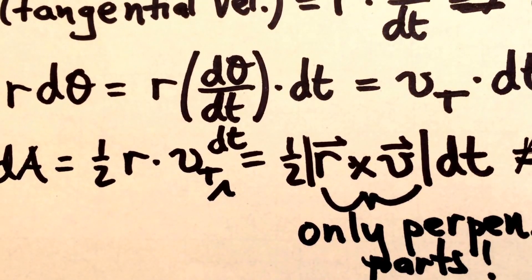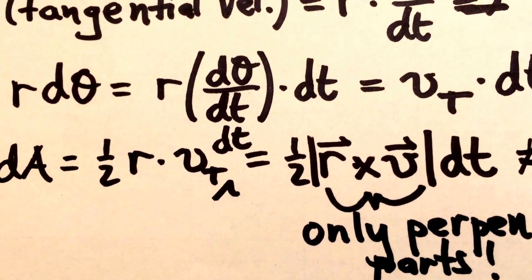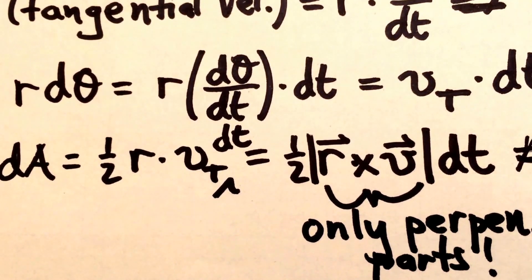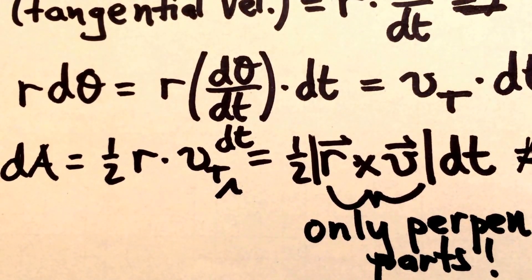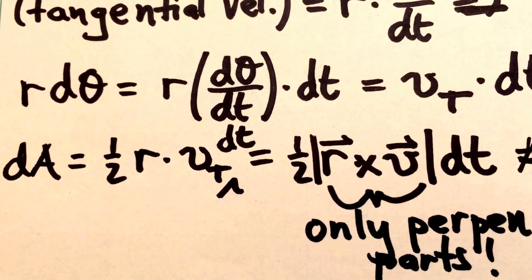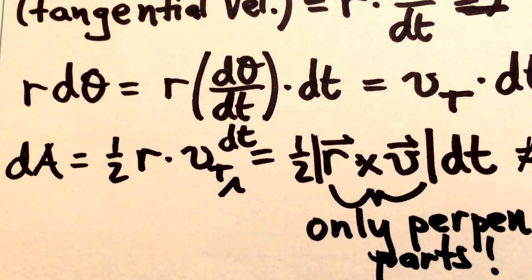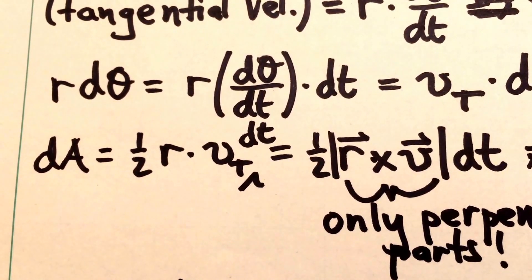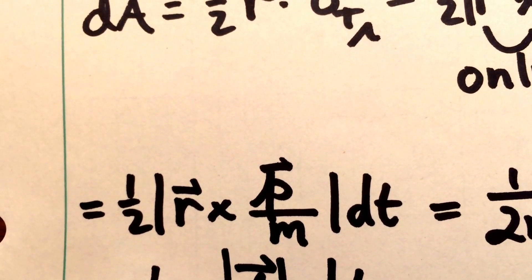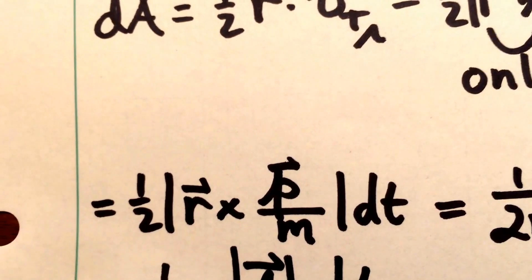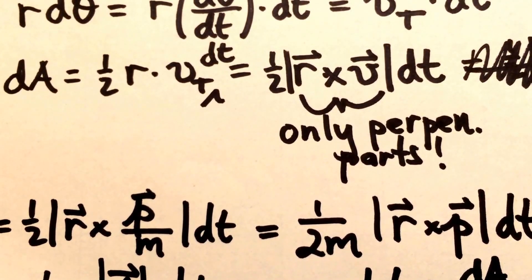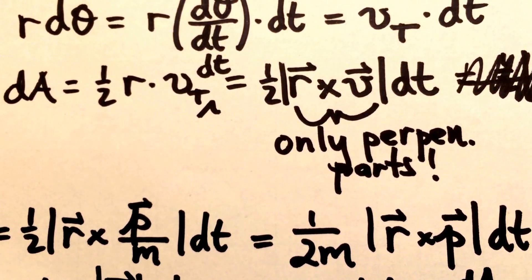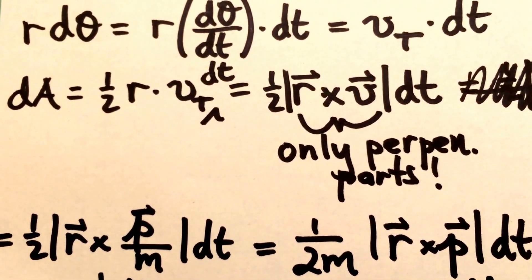The cross product selects out the portions of two vectors that are perpendicular to one another. So we can write r times the tangential velocity as vector r crossed into vector velocity, because r is the radial vector, and so the only component of the velocity that will remain is the component tangential to the radius vector. So r times the tangential velocity equals the magnitude of vector r crossed into vector v. The velocity vector is just the momentum vector divided through by the mass of the planet. So the little area of this triangle is one over two times the mass times the magnitude of r crossed into the momentum vector times the short amount of time dt.